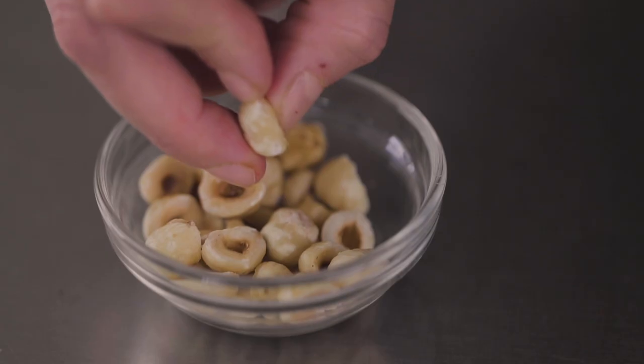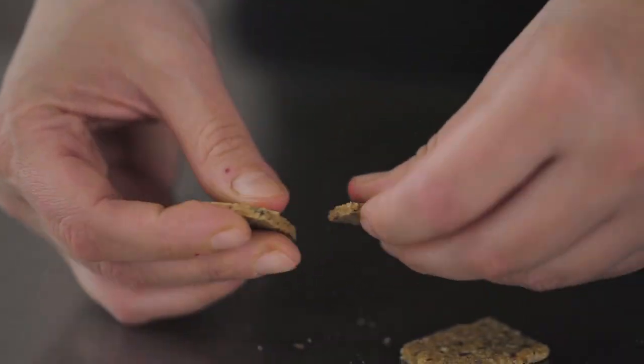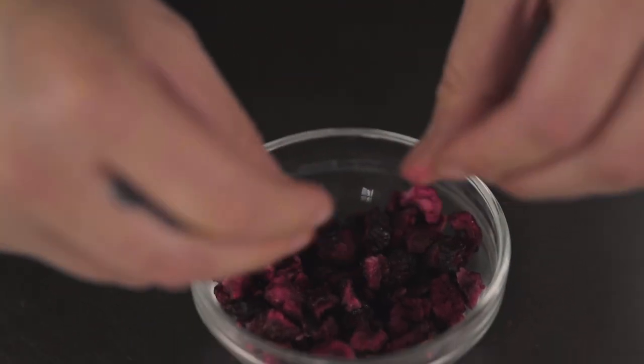Now once that's done, we're going to start with putting in the inclusions. Today I'm using roasted hazelnut halves, some cinnamon wafers, and freeze-dried cherry pieces.